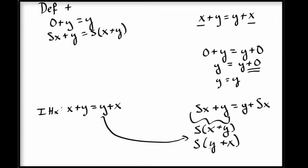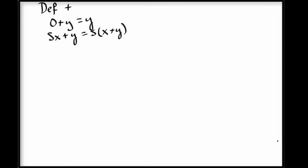So now the left hand side and right hand side are almost the same. We just need to show that the successor of y plus x is the same as y plus the successor of x. Again, we need to prove a lemma — a lemma about adding something to a successor. This lemma says that if you add x to the successor of y, then what you get is the successor of x plus y.